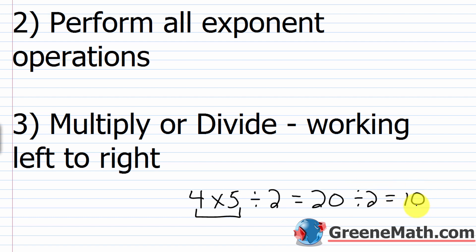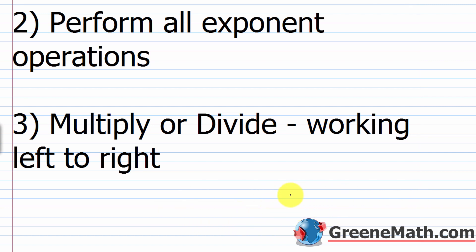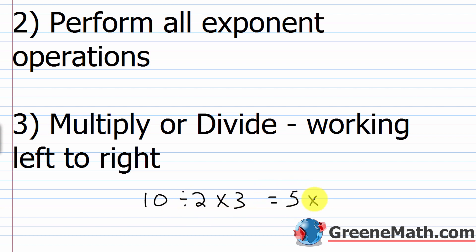If we flip the order around — say 10 divided by 2 times 3 — division occurs to the left of multiplication, so we divide first. 10 divided by 2 is 5, and then we multiply by 3, giving us 15. So multiplication and division are on the same level; it's the same step, and we do it working left to right.